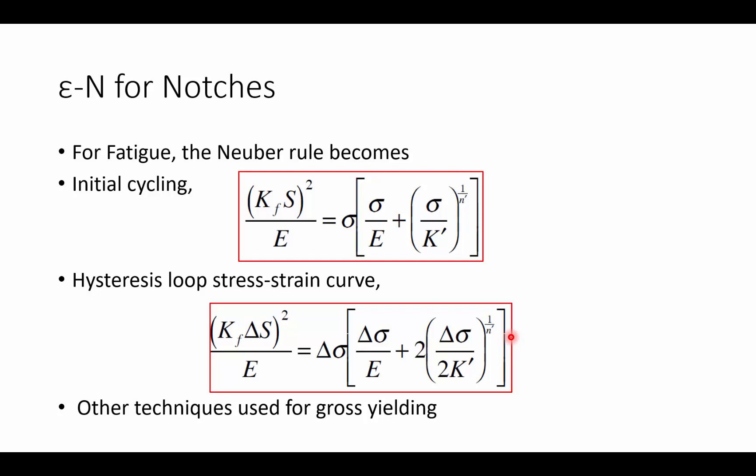These two equations work well when we have fairly simple yielding, when we have a case where the plastic strain field is not larger than the elastic strain field of the entire structure. But when we have components that are subject to gross yielding, where there's plasticity across the entire ligament area, we need to introduce other more complicated techniques.